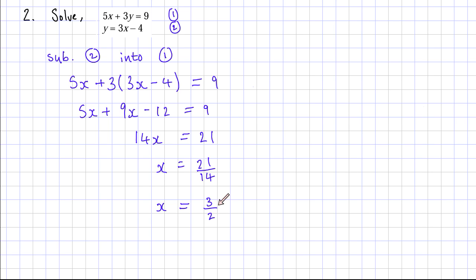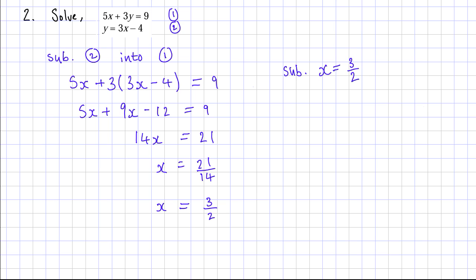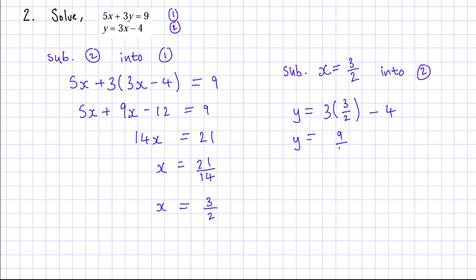I've found x equals 3 over 2. Now I'll use equation 2 to find y because it's much easier and doesn't require much rearranging. Substituting x equals 3 over 2 into equation 2: y equals 3 times 3 over 2 minus 4, so y equals 9 over 2 minus 4.